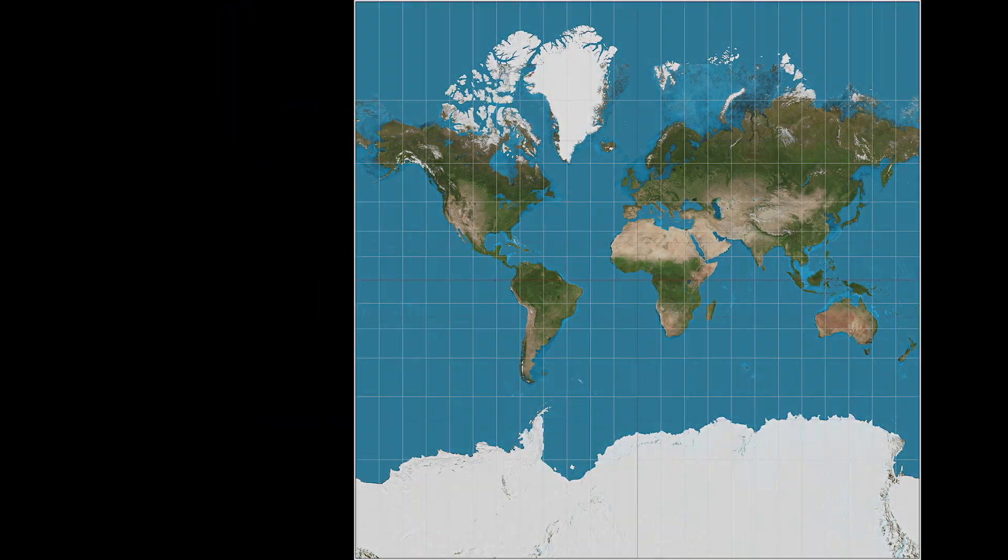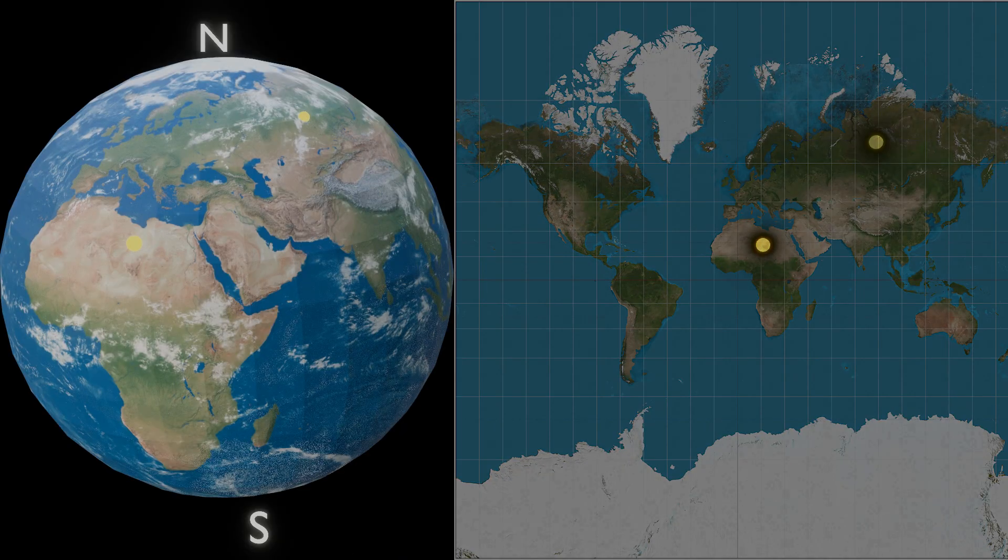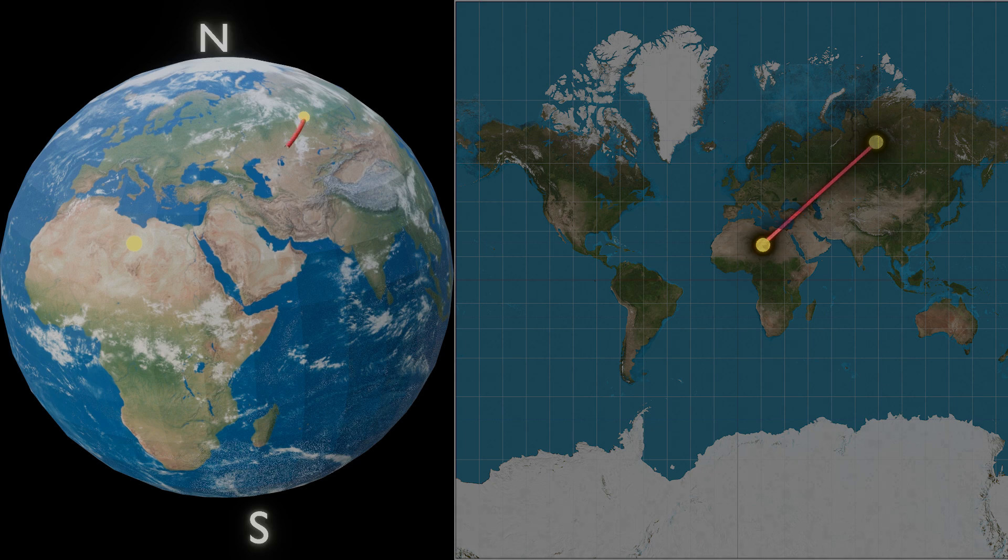It has a unique property. Straight lines on this map directly correspond to loxodrome.